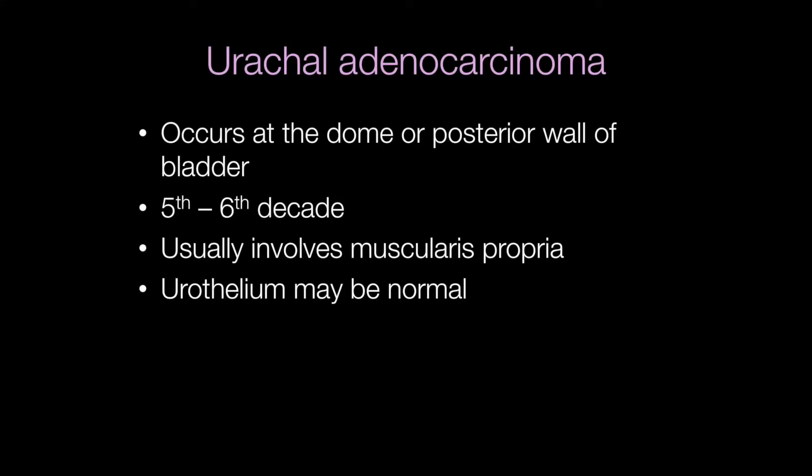Urachal adenocarcinomas usually occur at the dome or posterior wall of the bladder. They occur in the fifth to sixth decades and usually involve the muscularis propria. The urothelium may be normal, which is a useful diagnostic feature to differentiate a urachal adenocarcinoma from a urothelial carcinoma showing glandular differentiation.